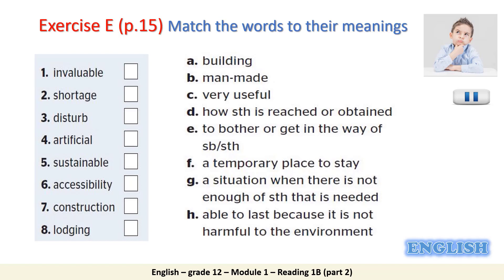Now let's check our answers. Number one: invaluable means C — very useful. In text A, igloo building was an invaluable skill for my ancestors. Number two: shortage means G — a situation when there is not enough of something that is needed. In text A, there is certainly no shortage, meaning plenty of snow. Number three: disturb means A — to bother or get in the way of somebody or something. Number four: artificial means man-made. In text C, the islands were artificial, meaning man-made islands.